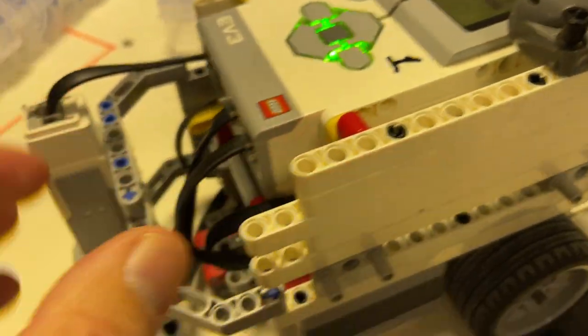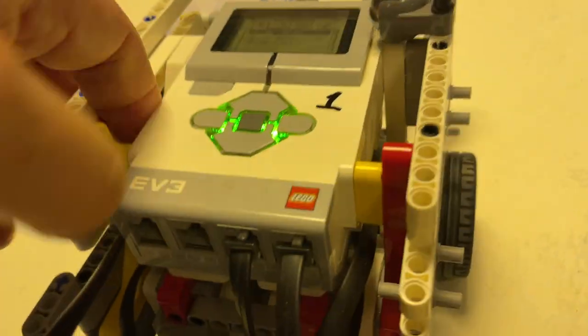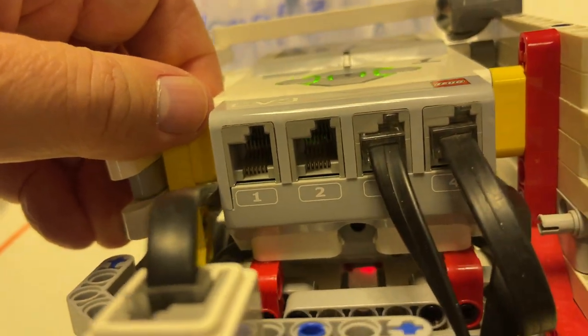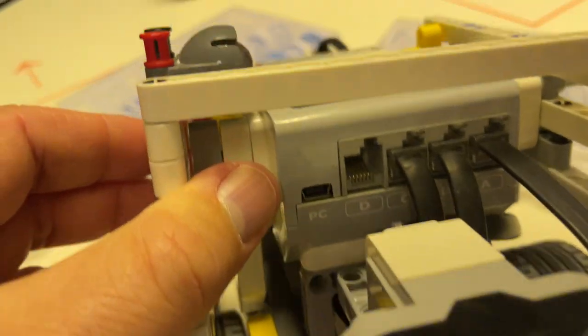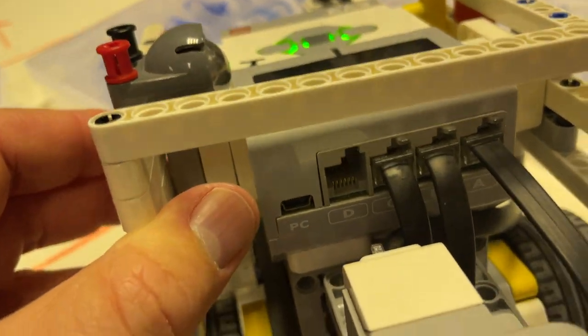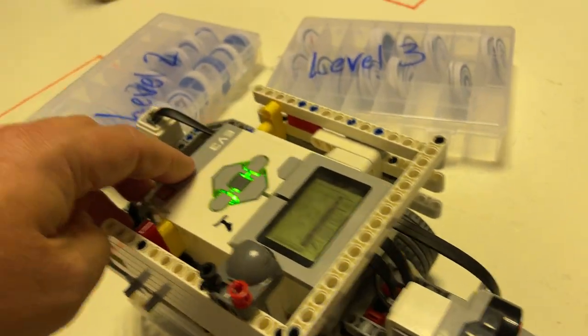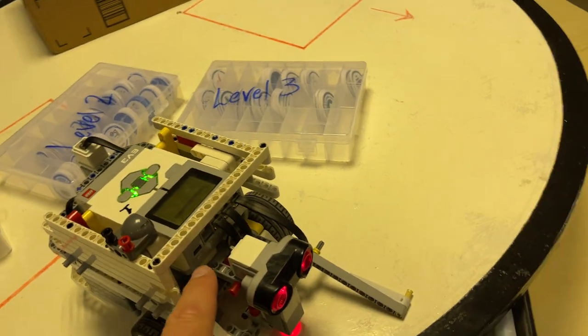And then you wire it back to here. Sensors are numbers, so sensors go in the one, two, three, four plugs, where motors go in the A, B, C, D plugs. So sensors go into numbers, motors go into letters.